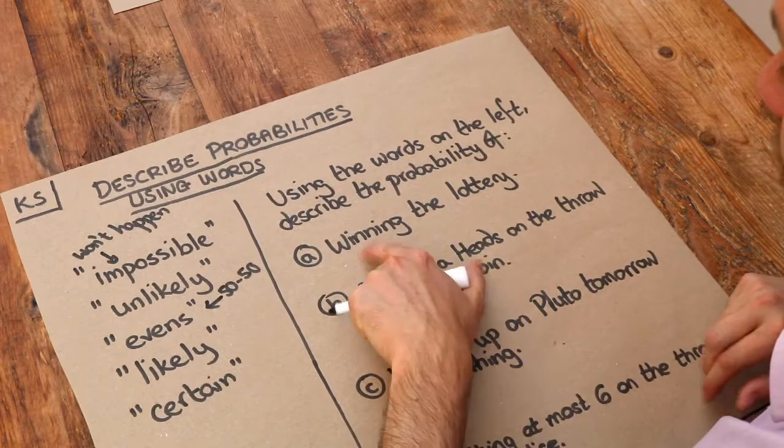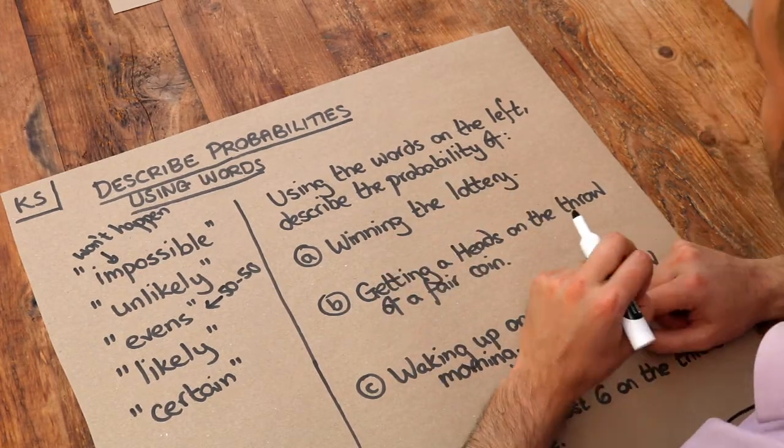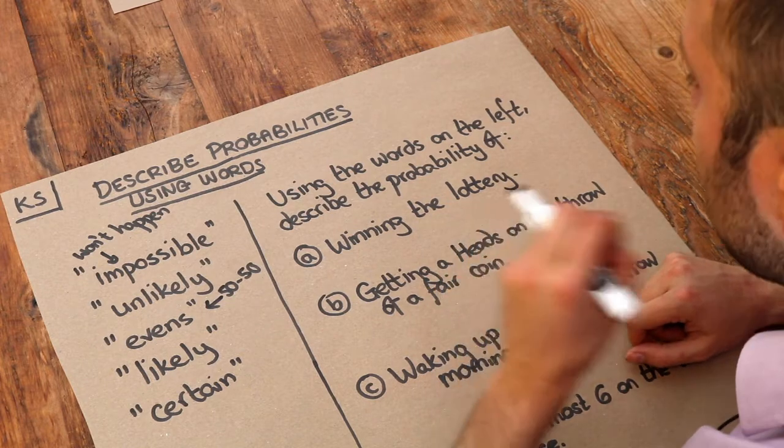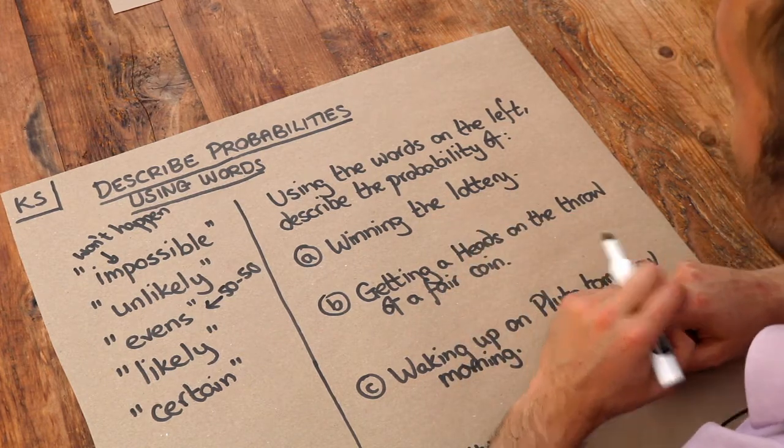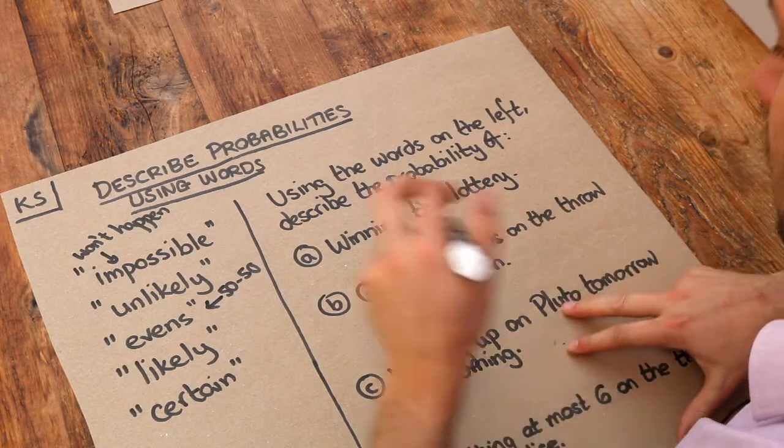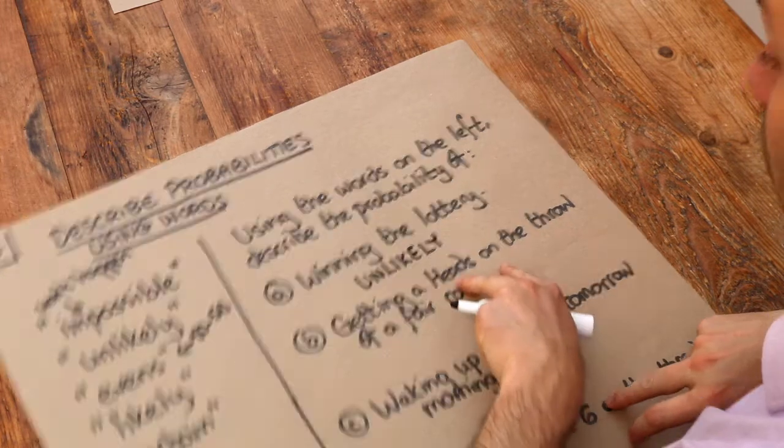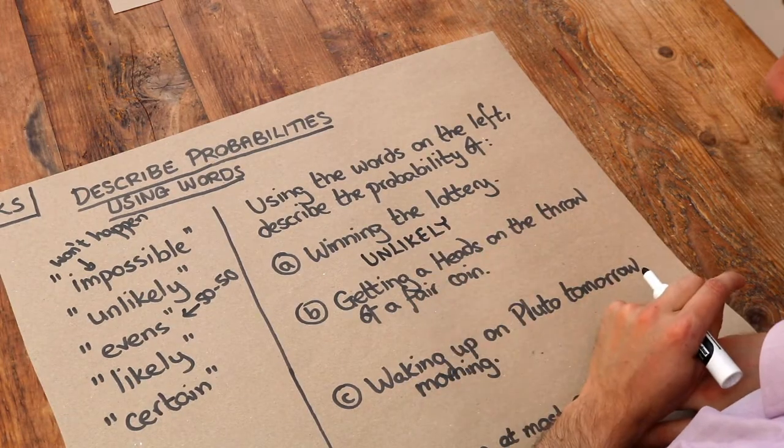So the first scenario is winning the lottery. Now if you buy a lottery ticket, there's a chance that you'll win, but it's not very likely that you're going to win because there's so many different combinations of numbers that you could pick. So this one we're going to say is unlikely. It could happen, but it probably won't happen.